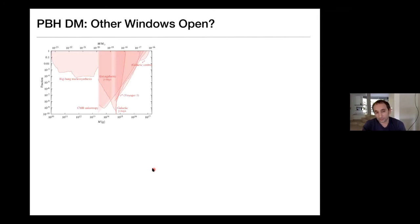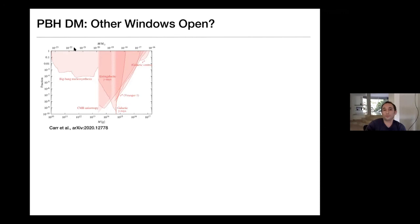What about other windows? Here I took a series of plots from a recent paper by Bernard Carr and colleagues discussing different types of signatures and constraints on primordial black holes in different mass ranges. There are mass ranges below the evaporation limit where you could have a PBH population relevant early on — even if they then evaporate due to Hawking radiation, they could still be relevant early on and there are ways to probe these. There are lensing constraints, the MACHO constraint, and dynamical constraints which probe different parts of the parameter space.